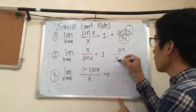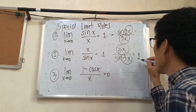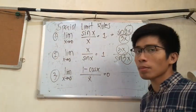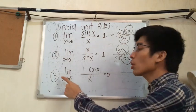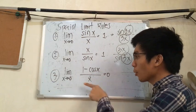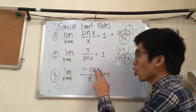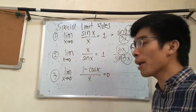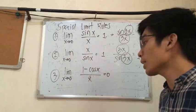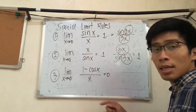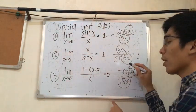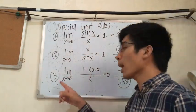For the third rule, we have one minus cosine over x as x approaches zero. Take note that this theorem is applicable whenever the variable inside the cosine function is the same as whatever is in the denominator. Automatically, the limit of that function is equal to zero. For example, one minus cosine 5x over 5x — since 5x inside the cosine is the same as 5x in the denominator, the limit is zero when x approaches zero.